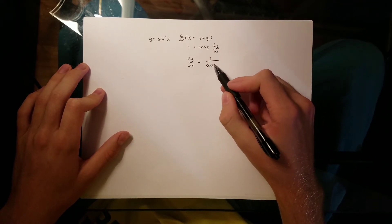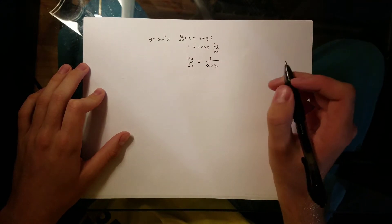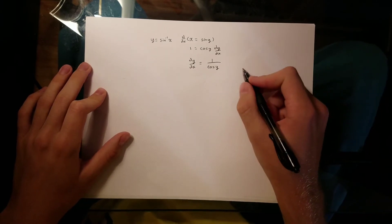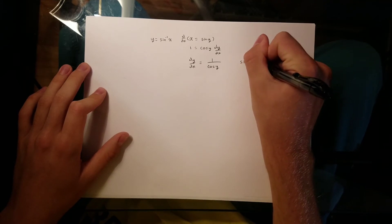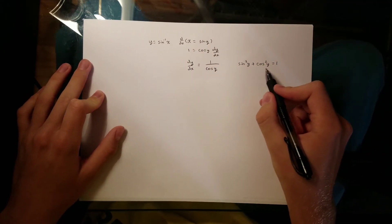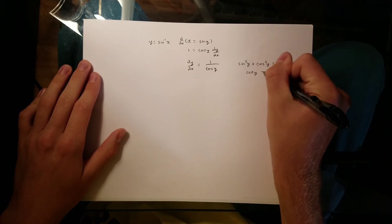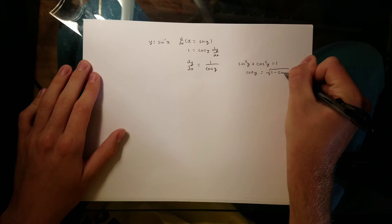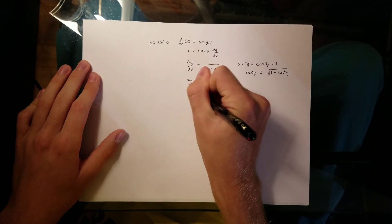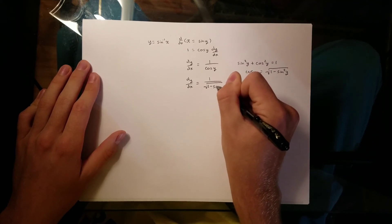Now we need to have everything in terms of x — we can't have a cosine of y. So let's use a trig identity and see if we can substitute something in to get rid of that cosine of y. We know that sine squared y plus cosine squared y is equal to 1. So we can solve for cosine of y: cosine of y is going to be equal to the square root of 1 minus sine squared y. Plugging that in, dy/dx is equal to 1 over the square root of 1 minus sine squared y.